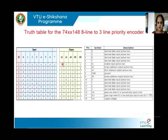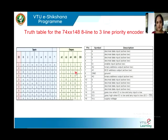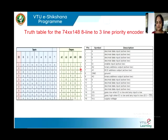The difference between the first row and the second row is that in the first row EO was high, whereas here EO is 0 — meaning we should not consider this output. This is the condition where EI is 0 but all the inputs are non-zero. On the other hand, when EI is 0 and any one of the inputs is 0, you are going to get the appropriate output. A0, A1, A2 will reflect the value; GS is 0. We need to consider the outputs only when GS is 0. If GS is high and EO is low, the output shall not be considered.